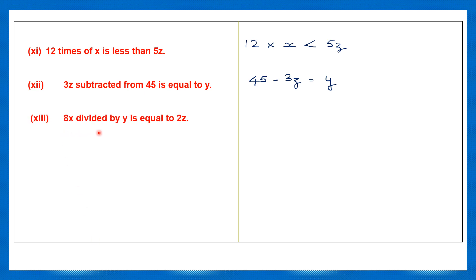Question 13: 8x divided by y is equal to 2z. So 8x divided — you can use a division sign — 8x divided by y is equal to 2z. Or you can write 8x over y is equal to 2z.